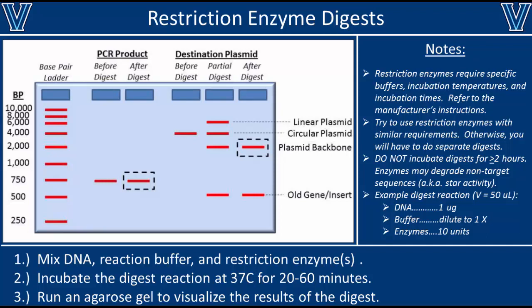The shortened plasmid backbone migrates farther because it's shorter than the parent plasmid. The old gene that we're removing represents the lower band on the gel — in this case it was only 500 base pairs long. Ideally your digest goes to completion and you see only two bands: the backbone on top and the old gene on bottom. To proceed with cloning, you'll want to extract the bands surrounded by dashed rectangles — the digested PCR product and the digested plasmid backbone — being very careful not to include any of the old gene.